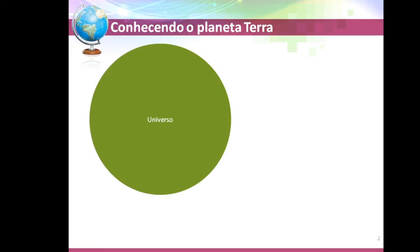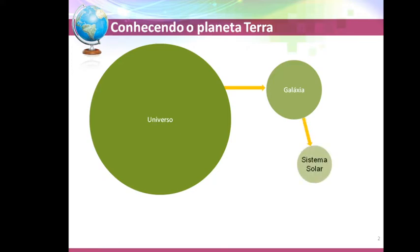O nosso planeta está inserido dentro de um universo. Porém, o universo é algo infinito, algo muito imenso. A gente precisa regionalizar para saber localizar o nosso planeta Terra. Então, dentro do universo está localizado uma galáxia; dentro dessa galáxia está localizado o sistema solar; e dentro do sistema solar está localizado o planeta Terra.